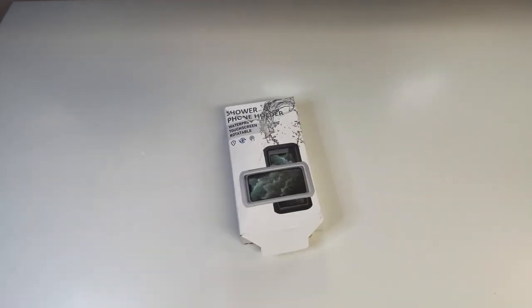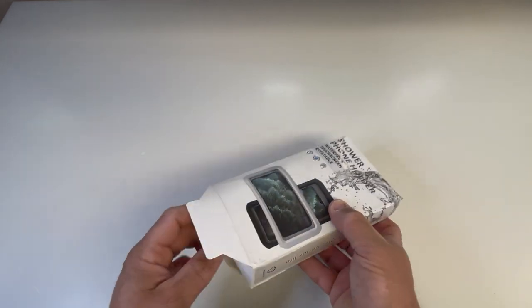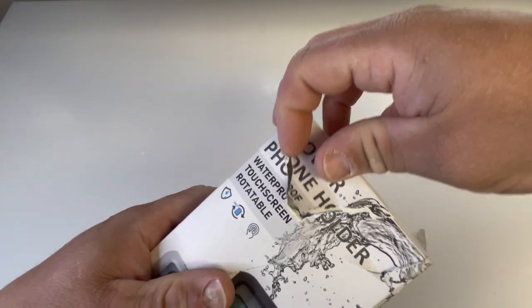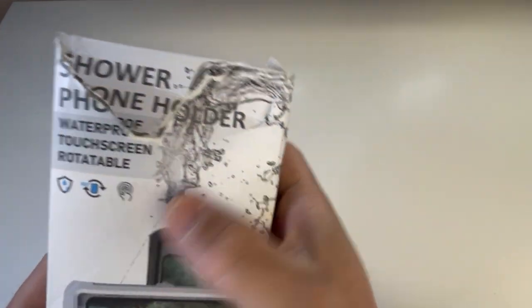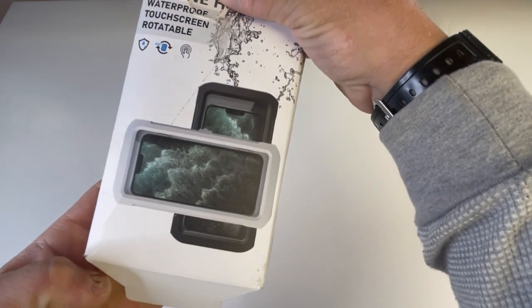All right, this might be life-changing. What is this slightly damaged package? If you can get this to... it's a shower phone holder - waterproof, touchable, and rotatable. Did you even know?